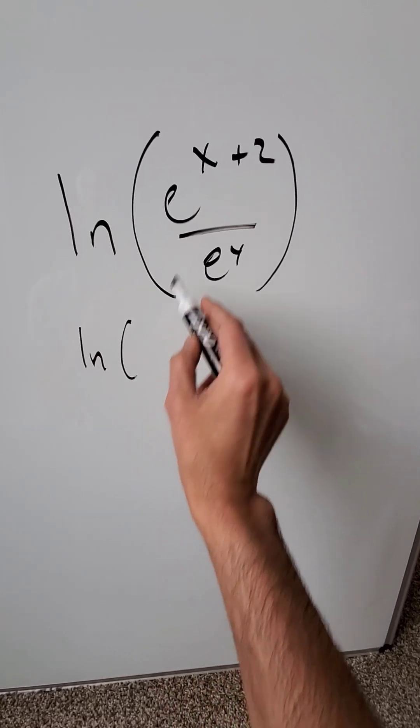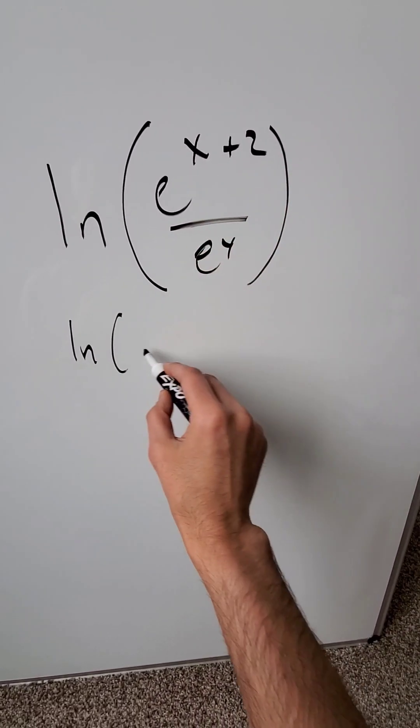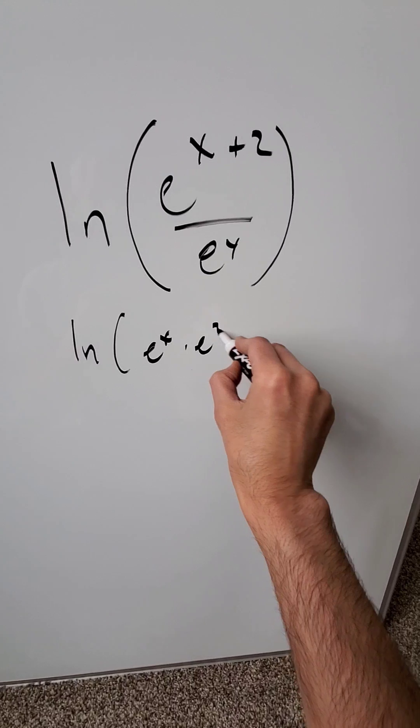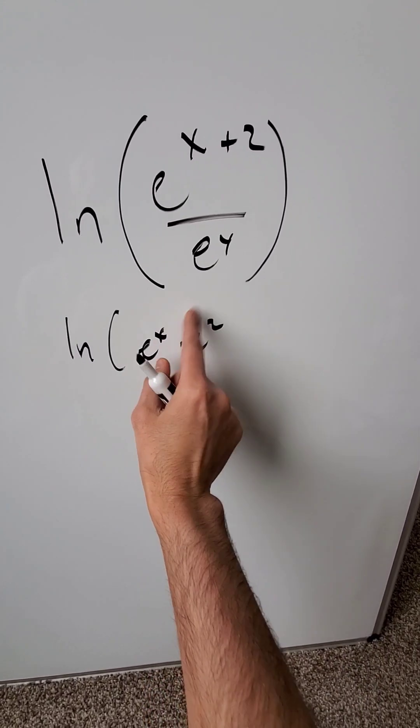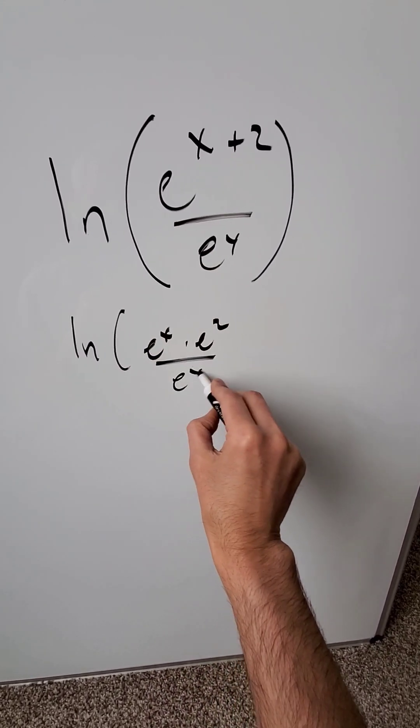Using laws of exponents, when I'm focusing here on the numerator, e to the power of x plus 2 is e to the x times e squared. Similar basis, the exponents add, then obviously we have e to the y.